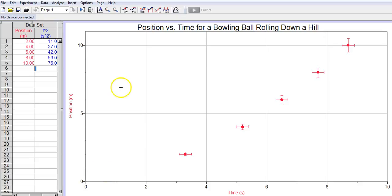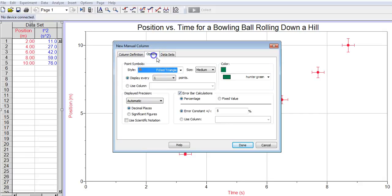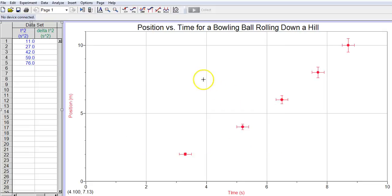So, here's how it's going to work. I'm going to go back to data, and I'm going to create another manual column. This column is going to be time squared uncertainty, and that's going to be a short name. I'm going to call it delta t raised to the power 2 because it's the uncertainty. And then that's going to be in seconds raised to the power 2 still. Under options, I'm going to make sure it's one decimal place to match the other, and I'm done with that.